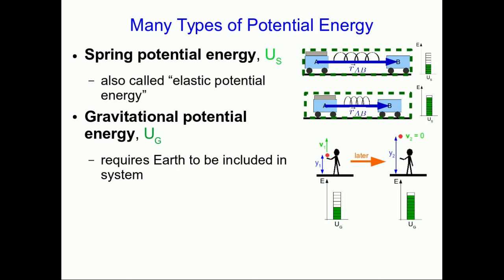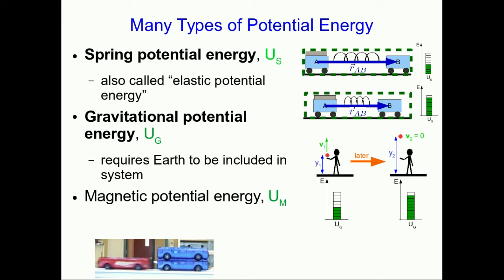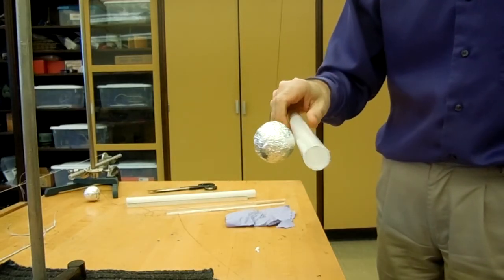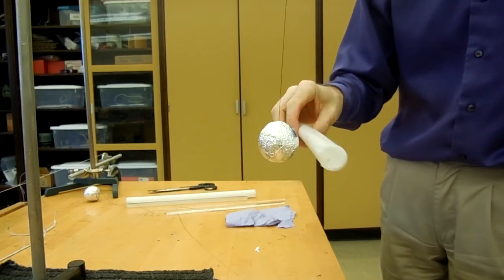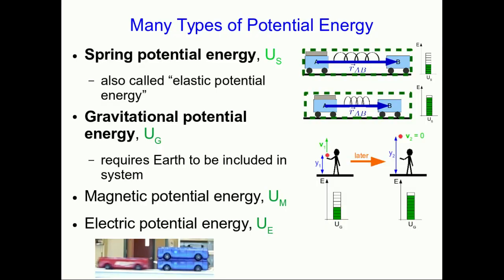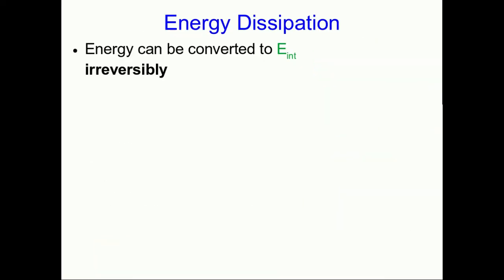Gravitational potential energy has to do with the gravitational interaction between objects and the earth, so we're only allowed to define a gravitational potential energy if we've included the earth in our system. Another type we've seen, but won't talk about much because it turns out to be rather complicated, is magnetic potential energy. We've already seen carts colliding elastically with reversible changes of state using magnets, and so there must be a potential energy associated with that magnetic interaction. In PHYS 1204, one type of potential energy we'll look at a lot is electric potential energy, which has to do with electrical interactions — repulsive or attractive — between various types of objects.